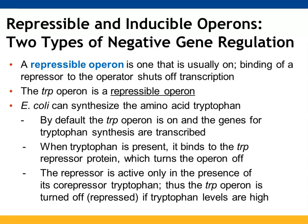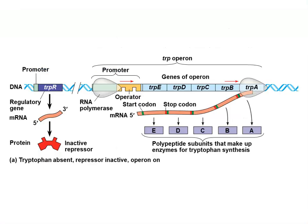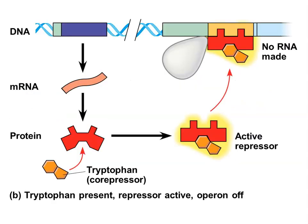Repressible operons are ones that are on. When your repressor has a co-repressor bound to it, it can bind to the DNA at the operator and shut off transcription. The regulatory gene and the promoter right before it make the inactive form of the repressor protein. As long as it's inactive, transcription is able to occur. However, when tryptophan is present in sufficient amounts, it can change the repressor's shape, making it active, allowing it to bind to the operator, and transcription no longer continues.